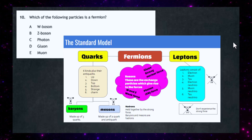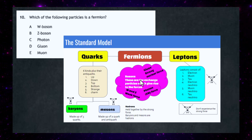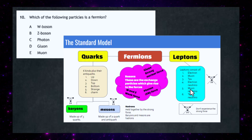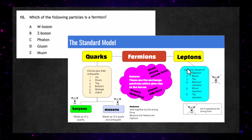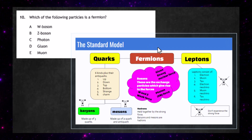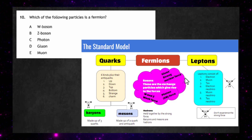Everything is made up of fermions except the force carriers — those are separate from the fermions. A muon is one of the leptons, which you'll find down here on the chart, and the muon is a lepton which is a fermion. So the answer we're looking for is 10E: the muon.